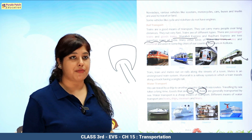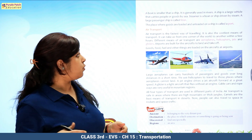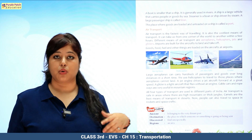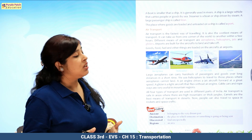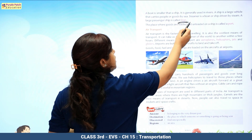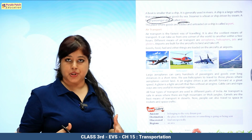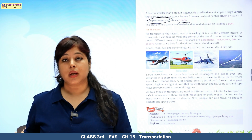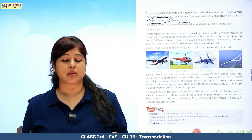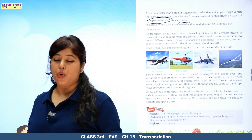You can see there are so many floors in a large ship. A boat is smaller than a ship and is generally used in rivers. A ship is a large vehicle that carries people or goods by sea — saman aur logon ko idhar se udhar le jaya jata hai. A steamer is a type of boat or ship driven by steam. A large passenger ship is called a liner — isme kaafi sare passengers ek time pe travel kar sakte hai. The place where goods are loaded or unloaded from a ship is called a port. Just like we need a railway station for trains and a bus stop for buses, for sea transport we need a seaport.